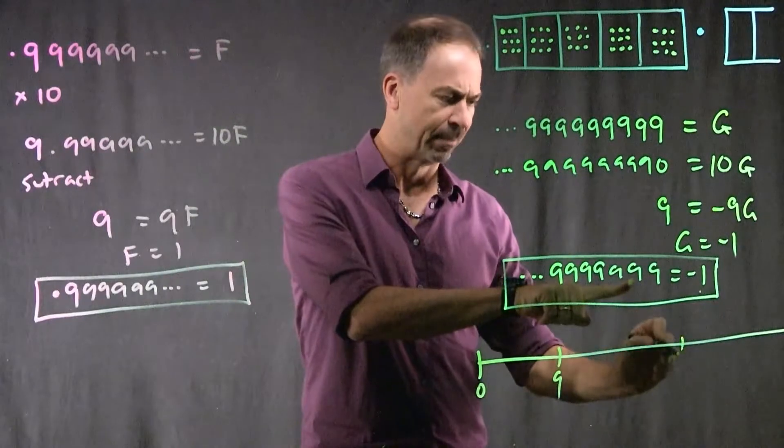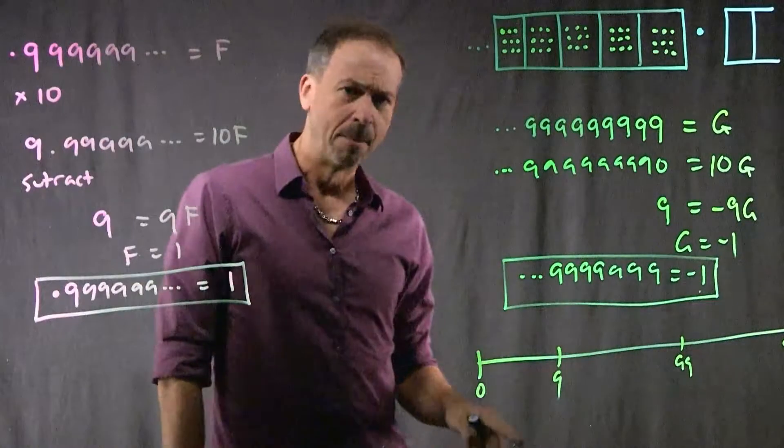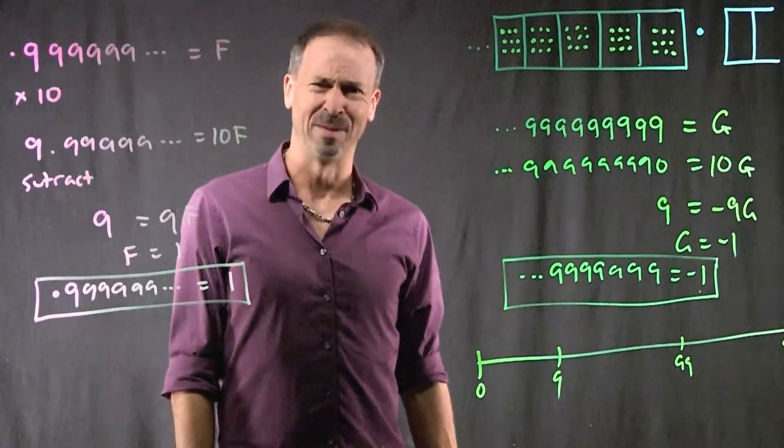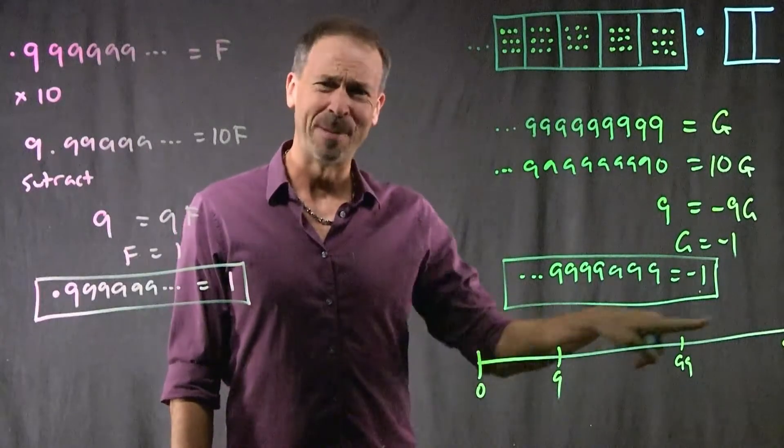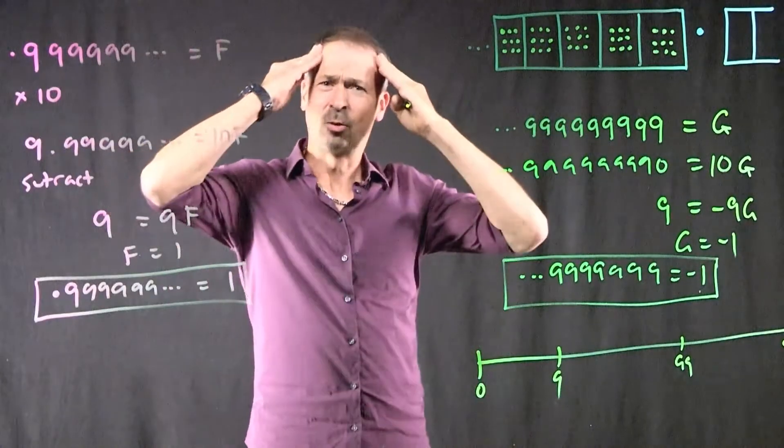Apparently these numbers, if you kept doing them, are approaching negative 1 on the number line. They're getting bigger and bigger and bigger to the right, somehow they're meant to be approaching the number negative 1. This is crazy.